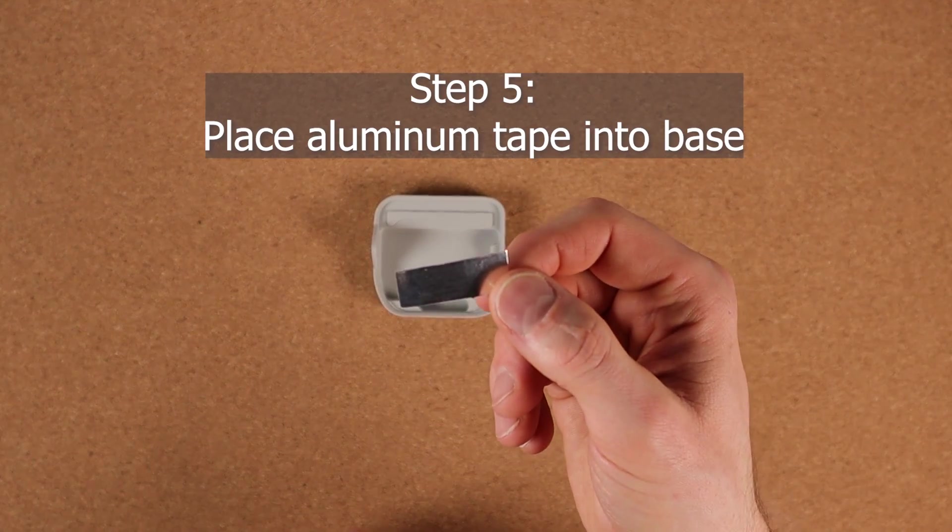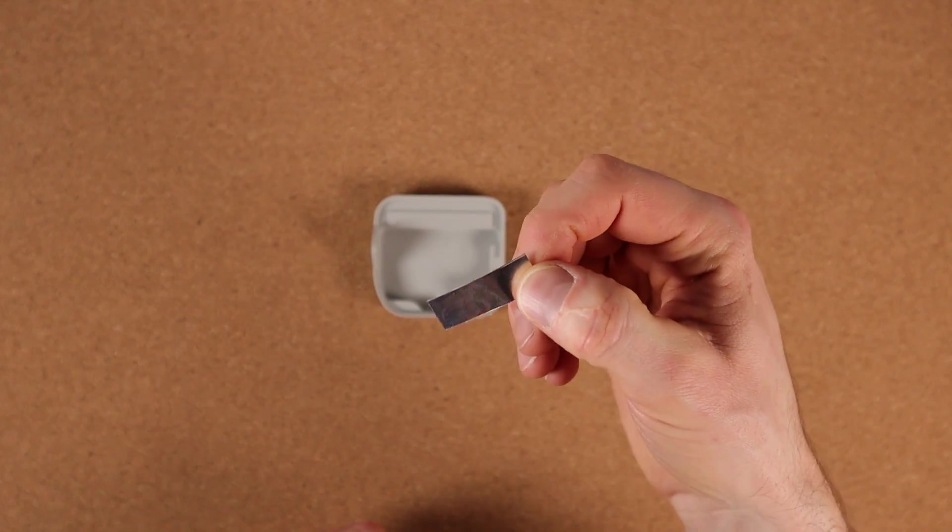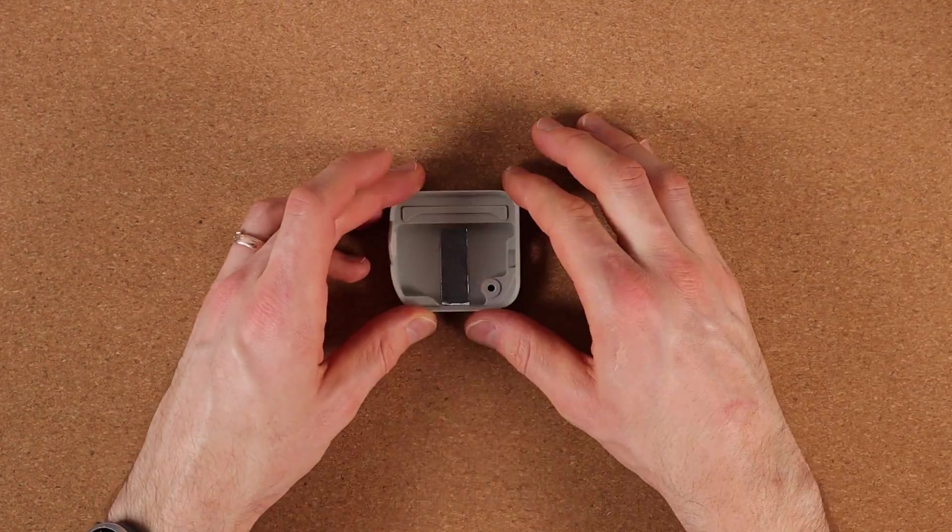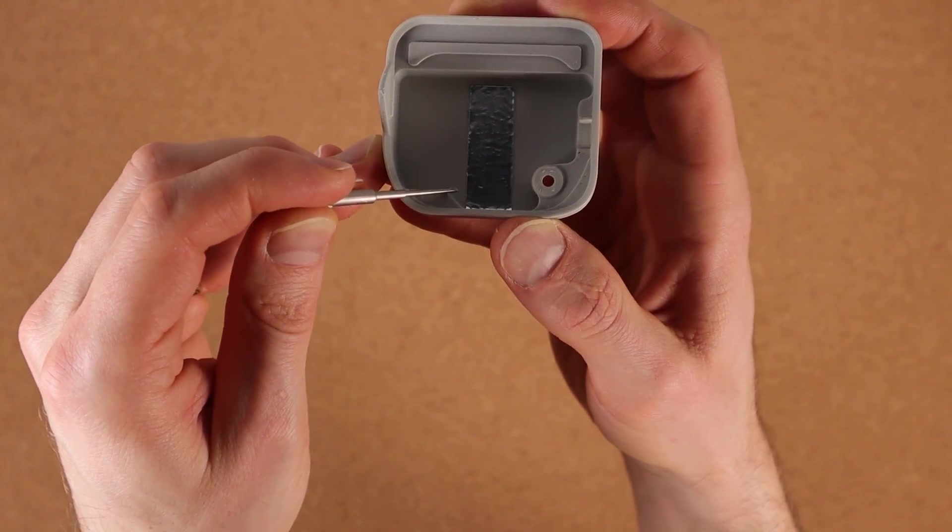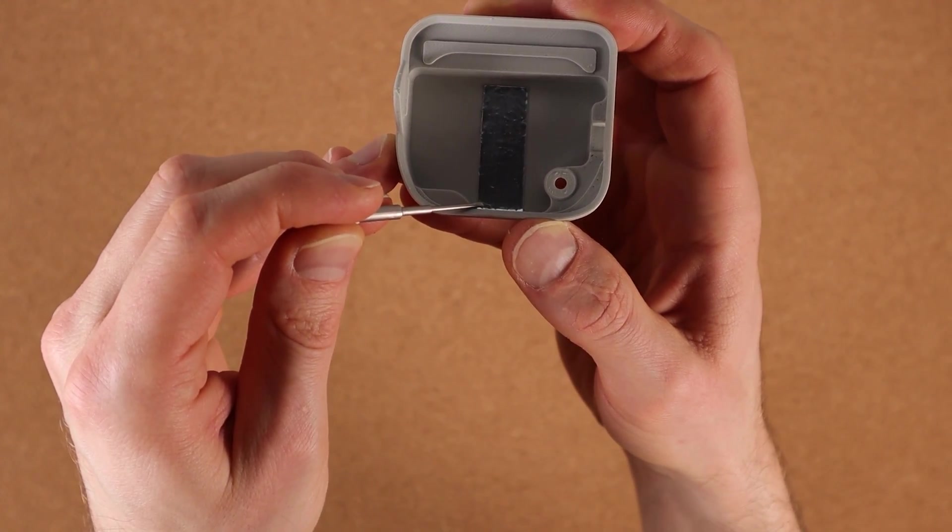Step five is to place this aluminum tape onto the base. So basically, it lines up right where this part slides down. It sort of meets the corner of the tape.